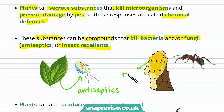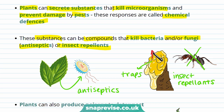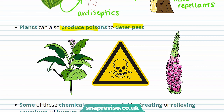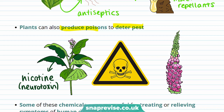Plants can also produce traps — these act as insect repellents. One example is the resin from pine. Plants can also produce antifungal compounds such as caffeine, which is toxic to both fungi and insects. Plants can also produce poisons to deter pests. For example, nicotine from the tobacco plant is a neurotoxin that specifically kills insects.